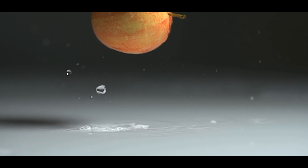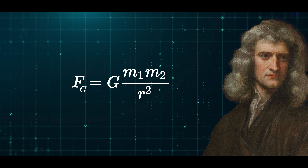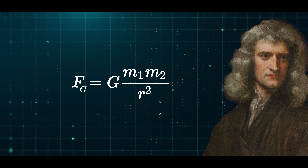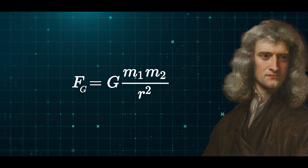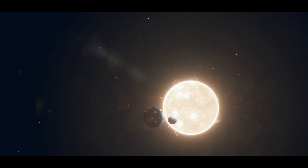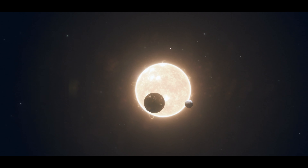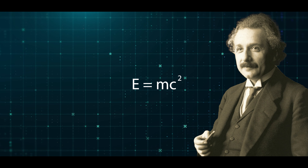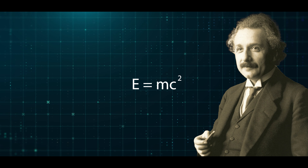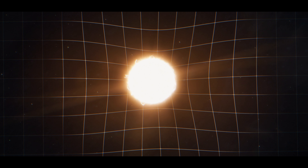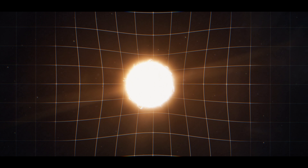But first, what is gravity? In Newton's classical mechanics, gravity is explained as a force acting between two masses. His law of gravitation states that every mass exerts an attractive force on every other mass, proportional to their masses and inversely proportional to the square of the distance between them. In Newton's theory, gravity is an invisible attractive force acting instantly across space.